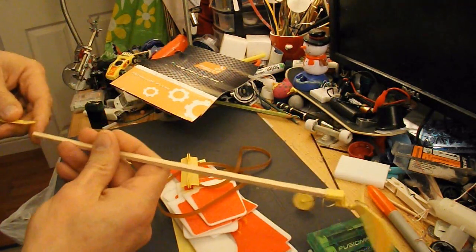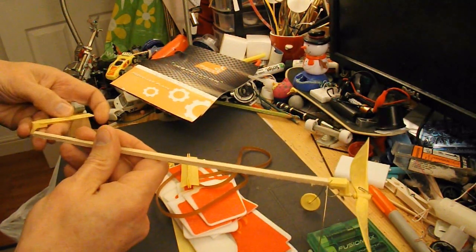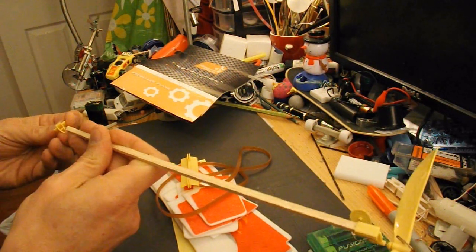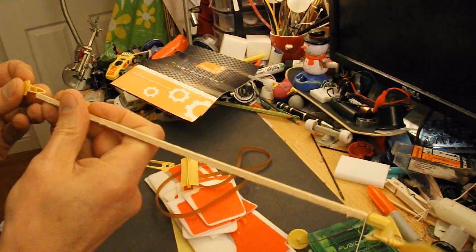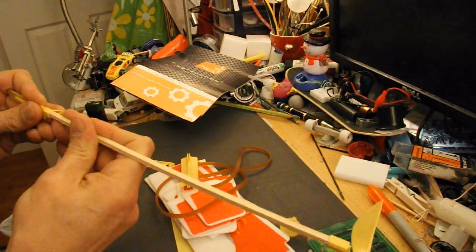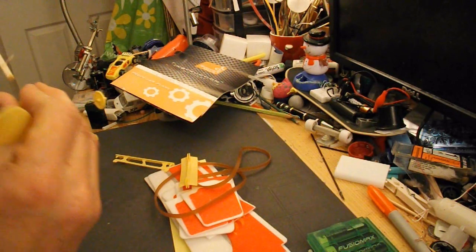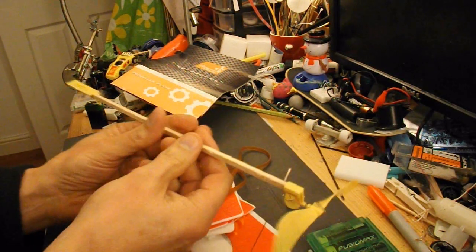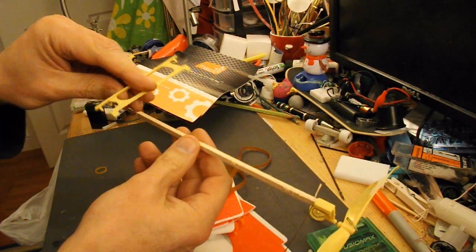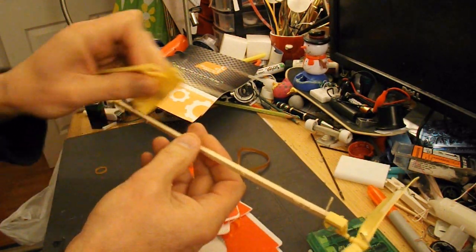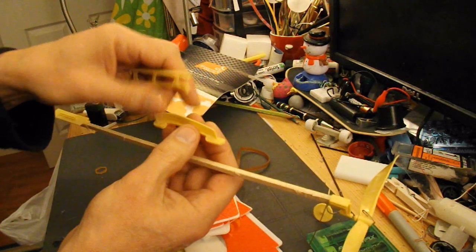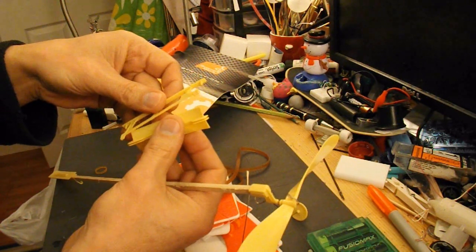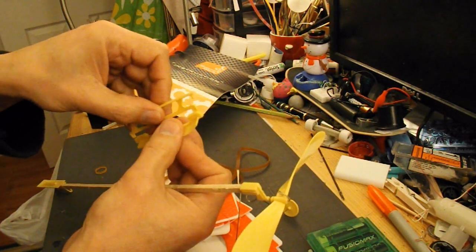That's the tail end. That's the bracket for the wing. Only we're going to have two wings. Three wings, triplane.